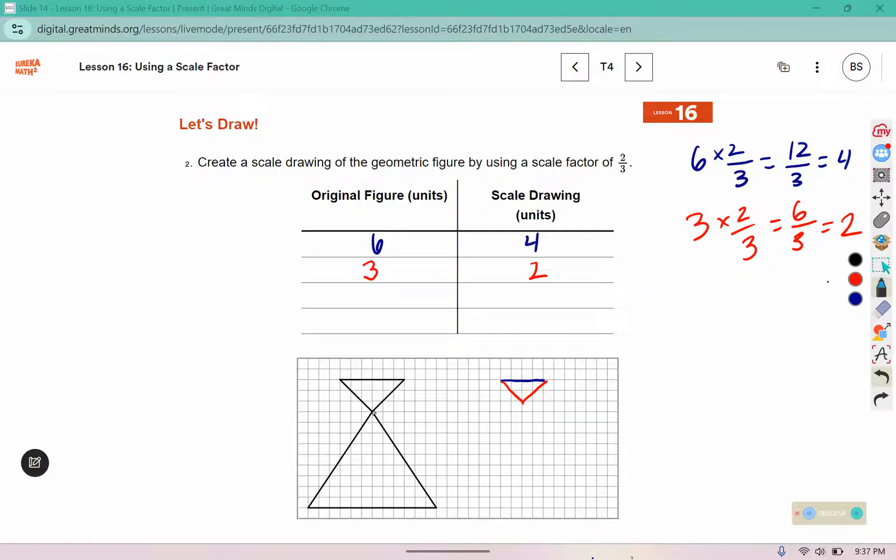Then this one is 1, 2, 3, 4, 5, 6, 7, 8, 9 tall. Nine times 2/3: 9 times 2 is 18, and 3 fits into 18 six times, so this is going to be 6 tall. And for this section across the bottom, this is 1, 2, 3, 4, 5, 6, 7, 8, 9, 10, 11, 12. Well 12 times 2/3 would be 24/3, but 3 fits into 24 eight times, so we're going to split off 4 in each direction and then connect them. So here I have a scaled version of that original picture.